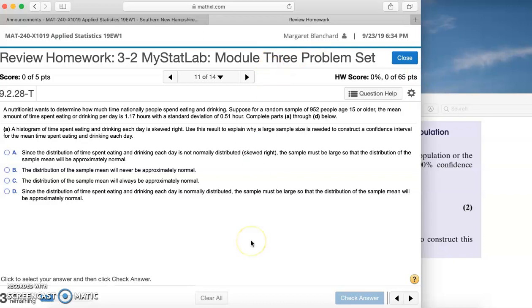Part A: A histogram of time spent eating and drinking each day is skewed right. That means not normal or not symmetric. Use this result to explain why a large sample size is needed to construct a confidence interval for the mean time spent eating and drinking each day. Let's look at our options. Since the distribution of time spent eating and drinking each day is not normally distributed, skewed right, the sample must be large so that the distribution of the sample mean will be approximately normal. That is true.